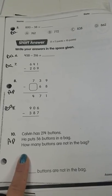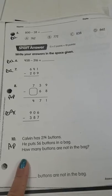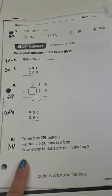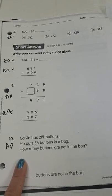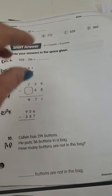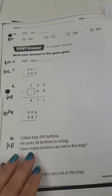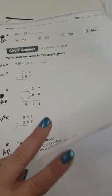Calvin has 214 buttons. He puts 56 buttons in a bag. How many buttons are not in the bag. So think about how many buttons he has. Then he puts some in a bag. We want to know what's not in the bag. How many are not actually in the bag. Draw pictures. Do whatever you need to do to solve that problem.